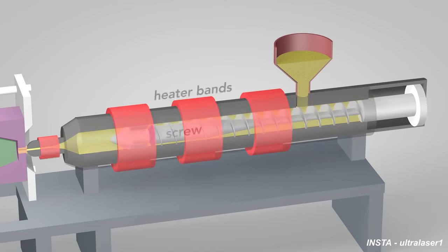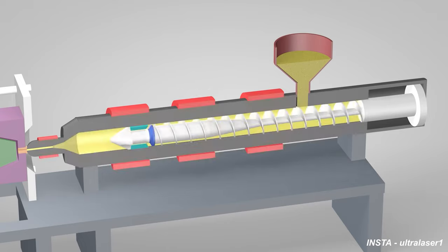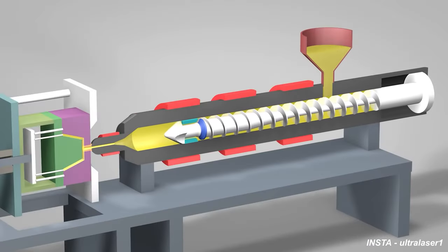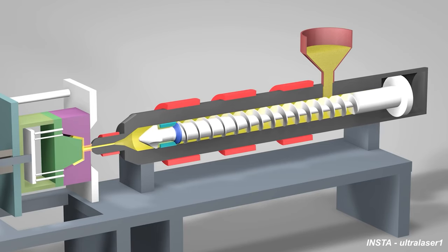Inside the barrel, a screw transports the pellets forward. Heater bands wrapped around the barrel warm up the plastic pellets. As the pellets move forward by the screw, they gradually melt and are entirely molten by the time they reach the front of the barrel.